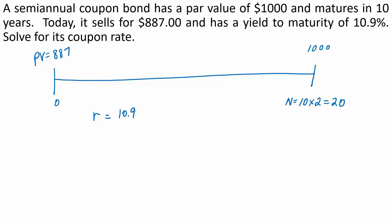So the semiannual rate will be 10.9 divided by 2, which is 5.45%.